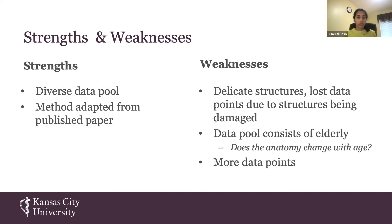After completing this project, one of our strengths was a diverse data pool and utilizing methodology from a published paper. However, some weaknesses included delicate structures and lost data points due to structures being damaged. Our data pool also consisted entirely of elderly individuals, raising the question of whether anatomy changes with age and how that could be studied. As always, using more data points to build a greater pool would be beneficial. Our research project was informative as a preliminary study, but moving forward we would need to address these strengths and weaknesses to build a better project.